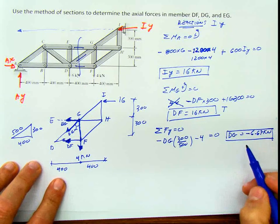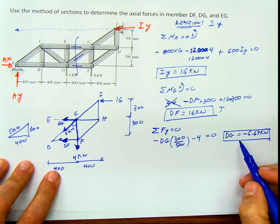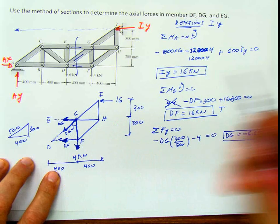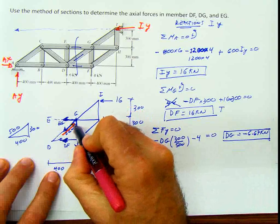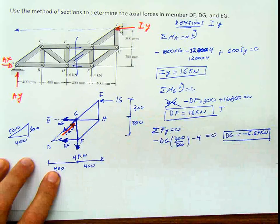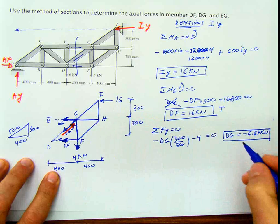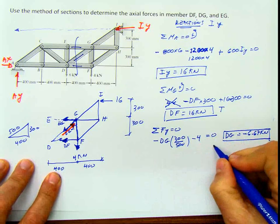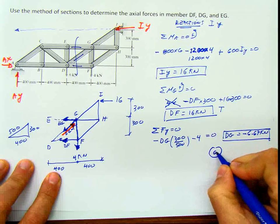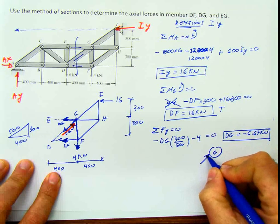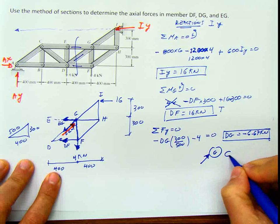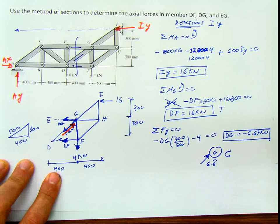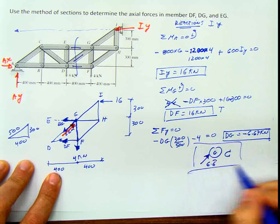The negative sign tells me that DG, which I assumed acting outward, is actually going in the opposite direction, meaning it is in compression. So at joint G, DG acts inward — that's a compressive force of 6.6̄ kilonewton.